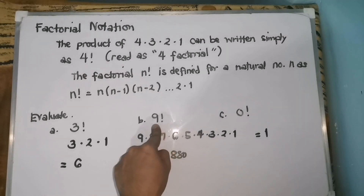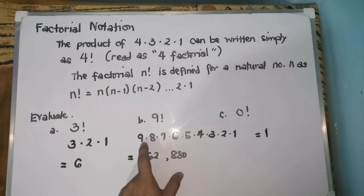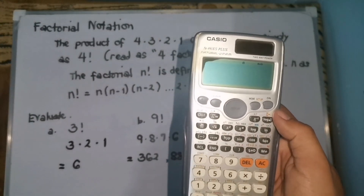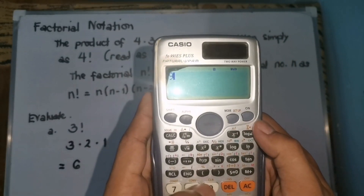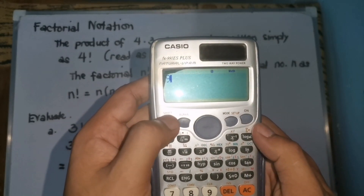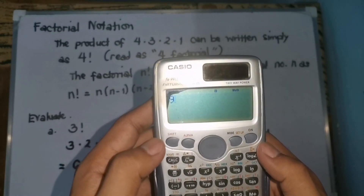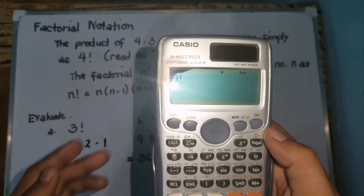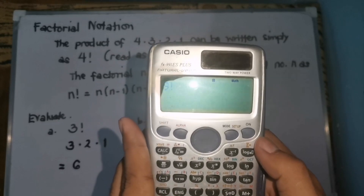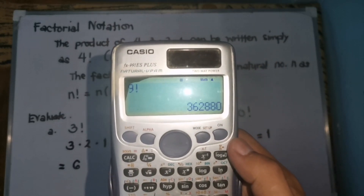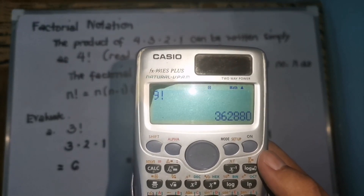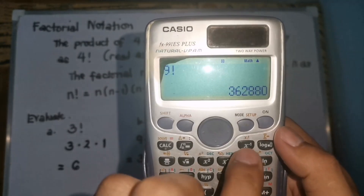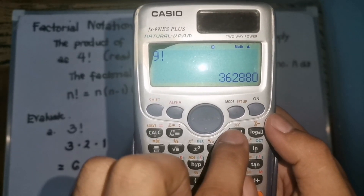We can also find factorials using a scientific calculator. For example, to get 9 factorial, instead of multiplying each number manually, we can use a scientific calculator. Press 9, then press Shift, then look for the symbol x! — that's the one with x and then an exclamation point. That button denotes factorial notation.